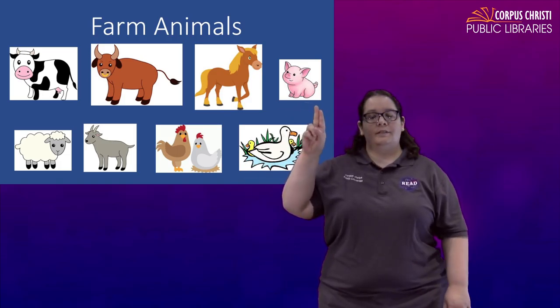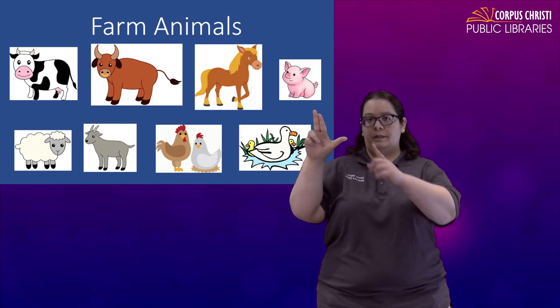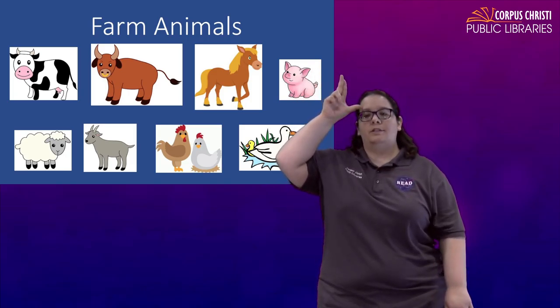For a horse you're going to take a U and open it. Place your thumb right at your temple and then kind of flick your ear forward like the ear of a horse. Horse.